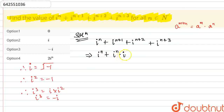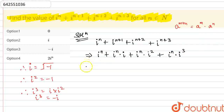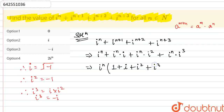So, iota raised to the power n into iota raised to the power 1, or simply iota; plus iota raised to the power n into iota squared; plus iota raised to the power n into iota cubed — using this property. Now what we can do is, from all these terms, take iota raised to the power n common. What we'll get is: 1 plus iota plus iota squared plus iota cubed.